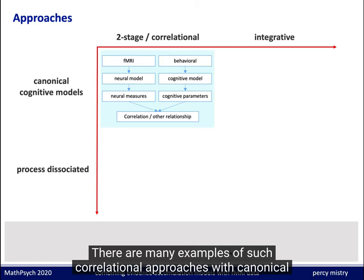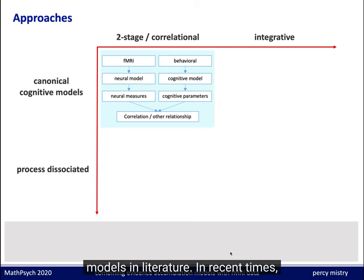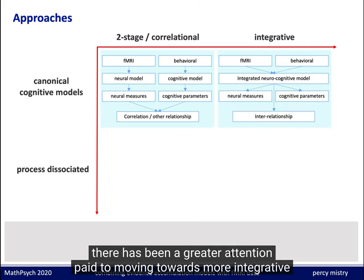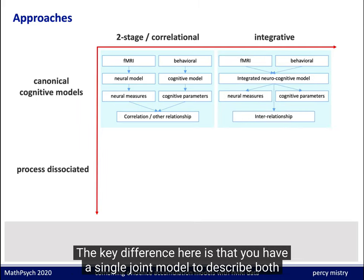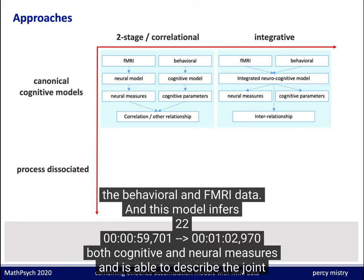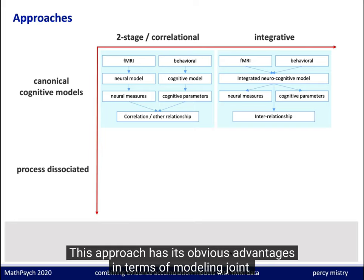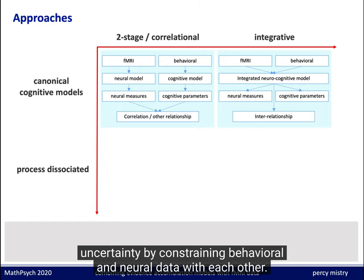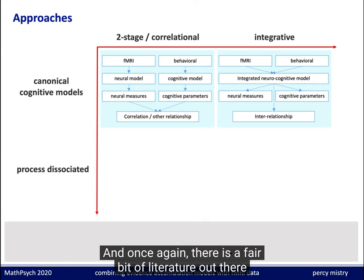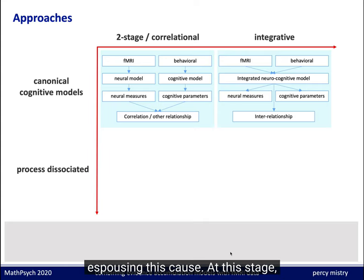There are now many examples of such correlational approaches with canonical models in the literature. In recent times there has been greater attention paid to moving towards more integrative approaches. The key difference here is that you have a single joint model to describe both the behavioral and fMRI data, and this model infers both cognitive and neural measures and is able to describe the joint relationship between them. This approach has its obvious advantages in terms of modeling joint uncertainty by constraining behavioral and neural data with each other.